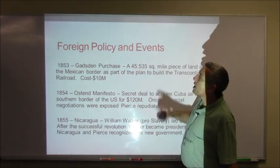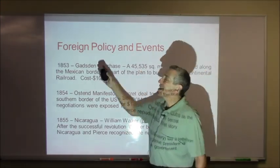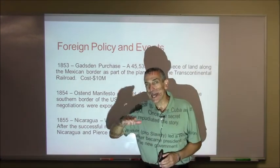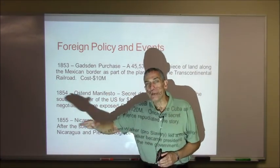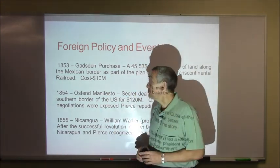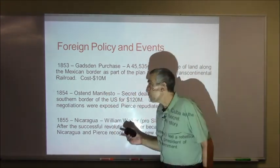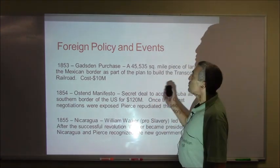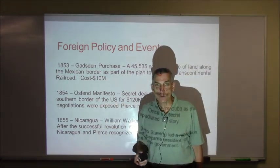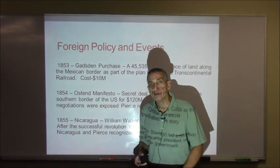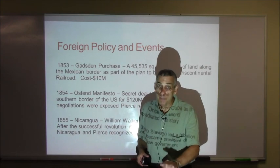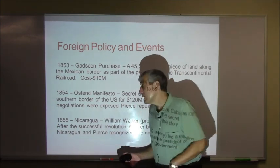Foreign policy event: the Gadsden Purchase. The Gadsden Purchase is land at the southern tip of the Mexican Cession on the Mexican border. It was purchased with the idea of building the southern portion of the Transcontinental Railroad through relatively flat desert land. It never happened, but that was the intention of it.